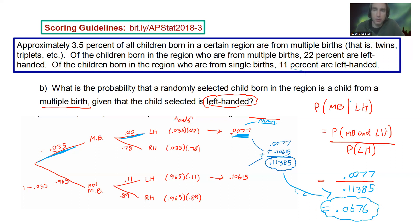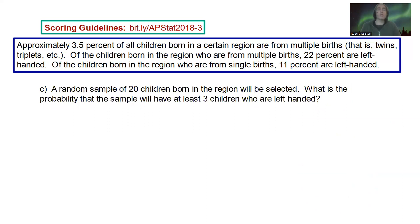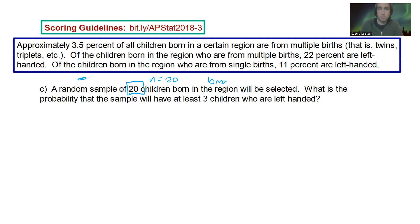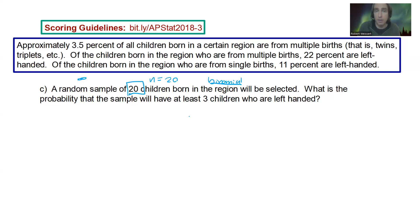Part C: a random sample of 20 children — a set number — so this is a binomial. What is the probability that the sample will have at least three children who are left-handed? Important note: if you didn't get an answer for part A, go back and write one down now, because you need that probability here. Use a reasonable estimate. In this case, P(left-handed) = 0.11385 from part A.